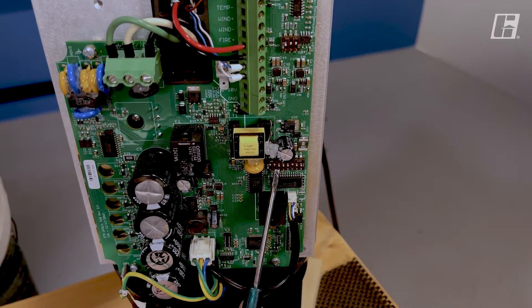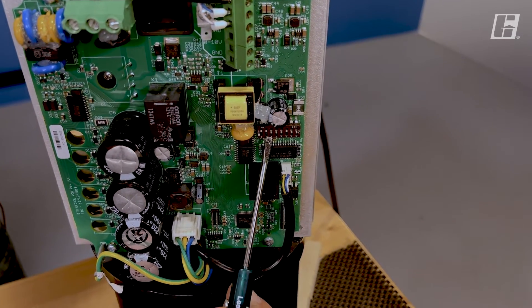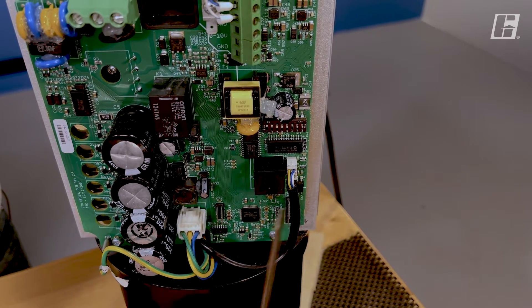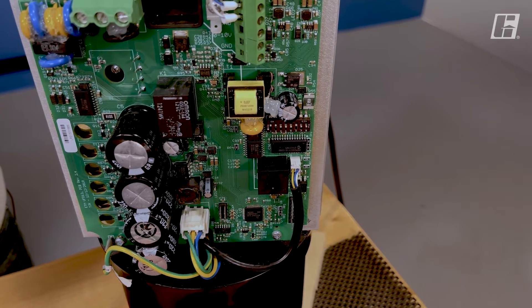Below that we have an addressing bank of dip switches. This needs to be independent for every fan that is connected within a network. Typically the first fan in the network is set for address number 2.